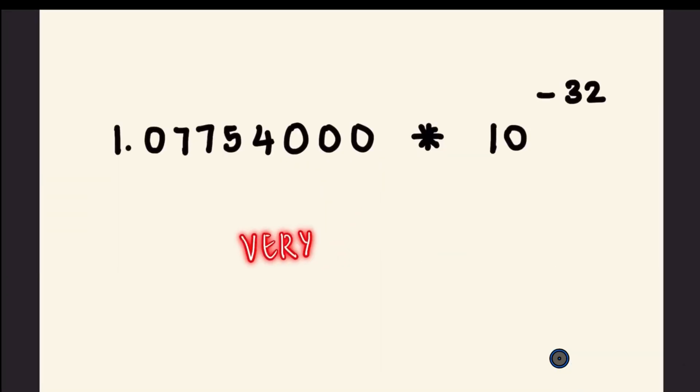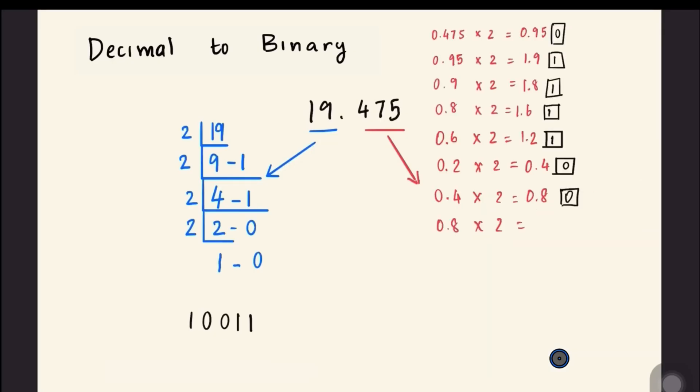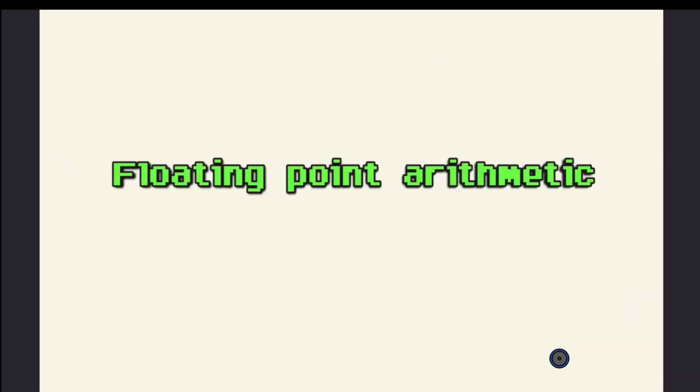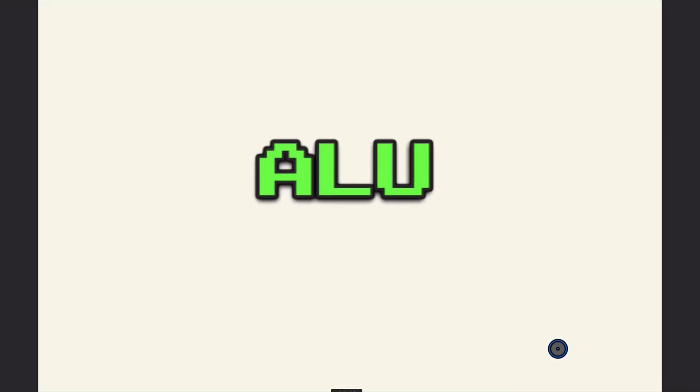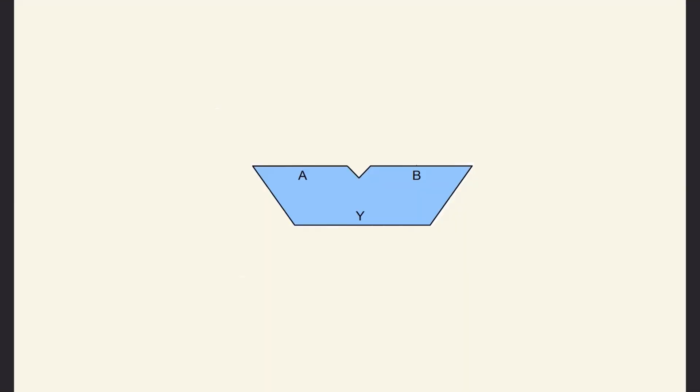In the last video, we learned about floating-point binary numbers. But how does the computer perform operations on such numbers? That is, how will this computation take place? Computation is largely handled by a component called arithmetic and logic unit, also called as the ALU.